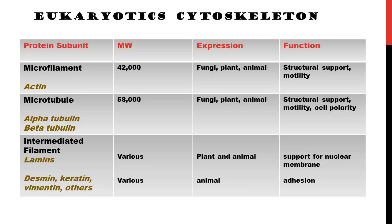Intermediate filaments include the lamins, which are primarily present in the nuclear membrane. Intermediate filaments are also composed of several other proteins: keratin, desmin, vimentin, and others. Keratin-containing filaments are found in epithelial cells. Desmin-containing filaments are seen in muscle cells. And vimentin-containing filaments are seen in mesenchymal cells. These are a few very important examples you should remember.